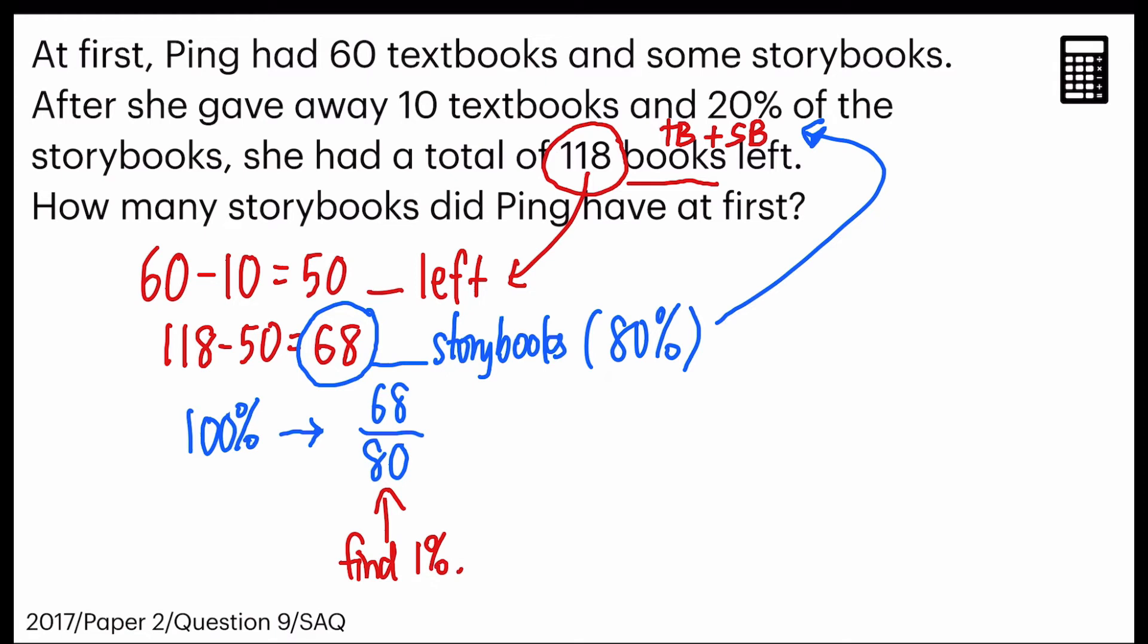And then, the next step, I will multiply it by 100. So since you can use the calculator, you can press this straight away, and you will get 85 as the answer. And that's my final answer, 85 storybooks.